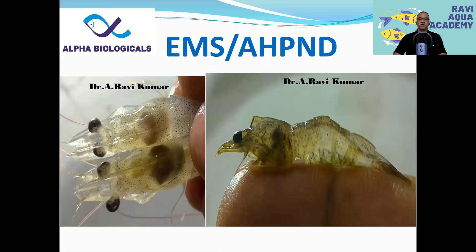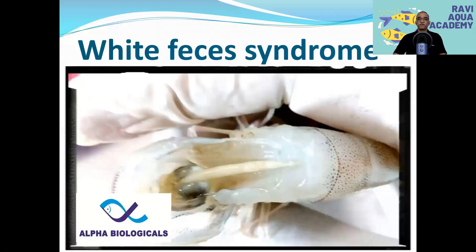EMS or AHPND — fortunately we don't have this disease in India. The identification is atrophy of the hepatopancreas; the hepatopancreas size becomes very small. You can clearly see hepatopancreas atrophy compared to the healthy one. And white fecal syndrome — you can see white mucus-like substance in the midgut of the shrimp. We don't know the exact reason, but Vibrio is associated with it, and most farmers are able to control white feces by controlling Vibrio infection.